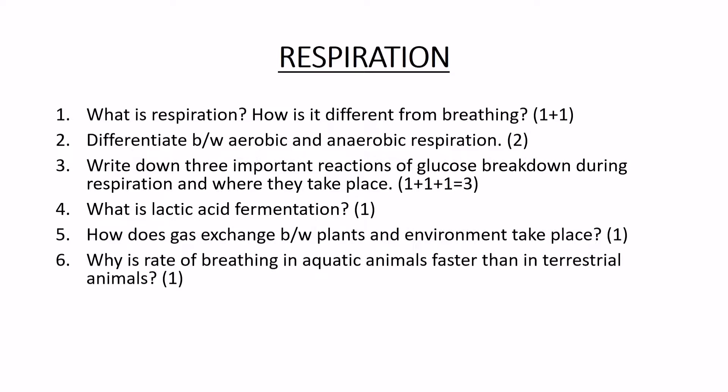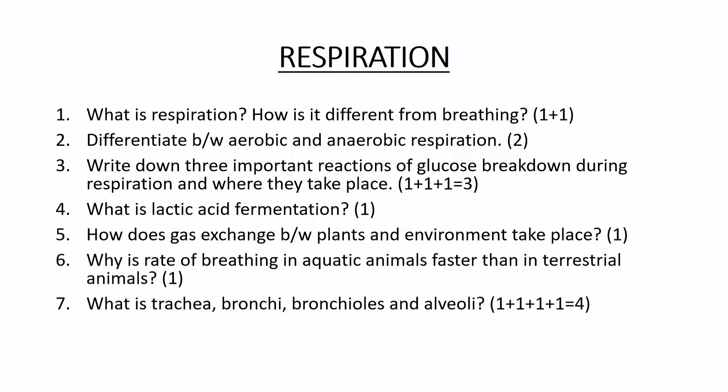The respiratory system includes parts: trachea, bronchi, bronchioles, and alveoli. Human respiratory pigments are in RBC. RBC contains hemoglobin. The respiratory pigments are called hemoglobin, found in the lungs and alveolar region, binding oxygen.